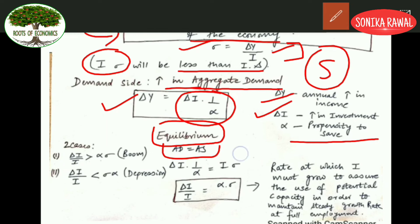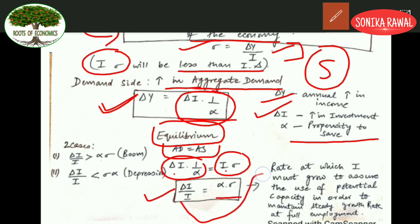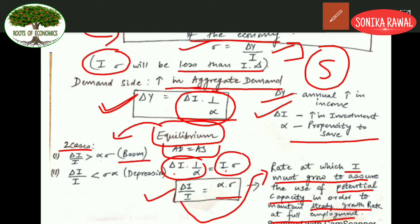On the supply side, change in income equals I·σ; on the demand side, ΔY equals ΔI·(1/α). Ultimately we are trying to find the growth rate of investment, so taking I into the denominator gives us ΔI/I equals α·σ. This represents the rate at which investment must grow to assure that potential capacity is used such that steady growth is maintained at full employment. If there is no equilibrium, cases of disequilibrium arise: either boom when demand exceeds supply, or depression when demand is less than supply.